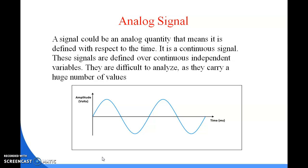The amplitude of a periodic variable is a measure of its change in a single period. There are various definitions of amplitude — it can be described as a function of the magnitude of the differences between the variable's extreme values. Changes in the periodic values relate to what is known as the amplitude.